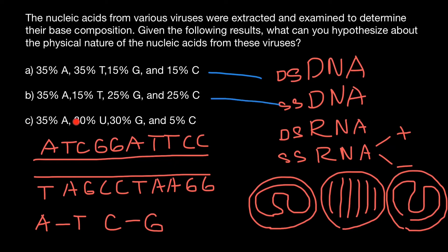And as for the last variant, we have here 35% adenine, 30% uracil, 30% guanine, and 5% cytosine. We see that numbers of the bases guanine and cytosine are not equal. And we see here instead of thymine, uracil. So if we have uracil, that means that this is RNA-based virus, but it also can be double-stranded. But because number of uracils and adenines are not equal, we can say that this is single-stranded RNA virus.